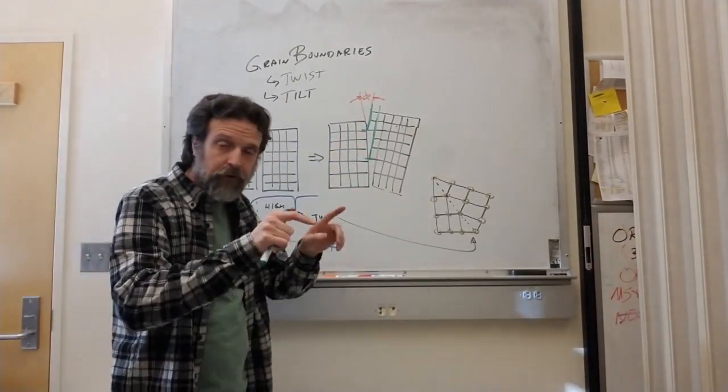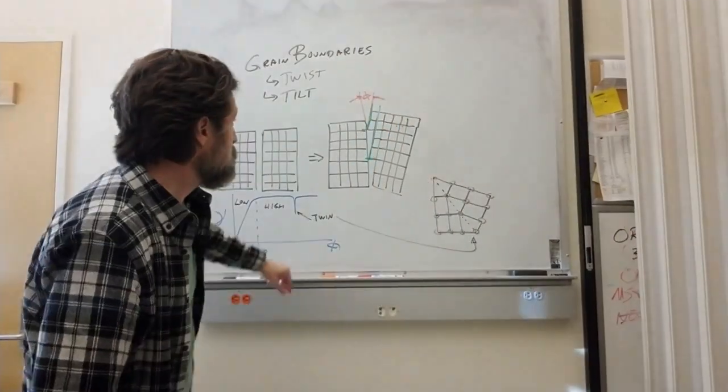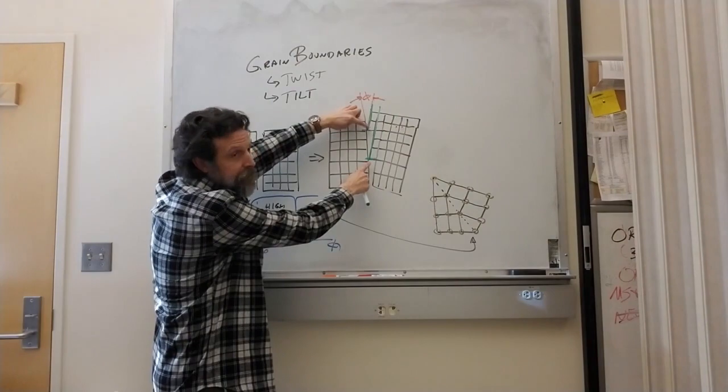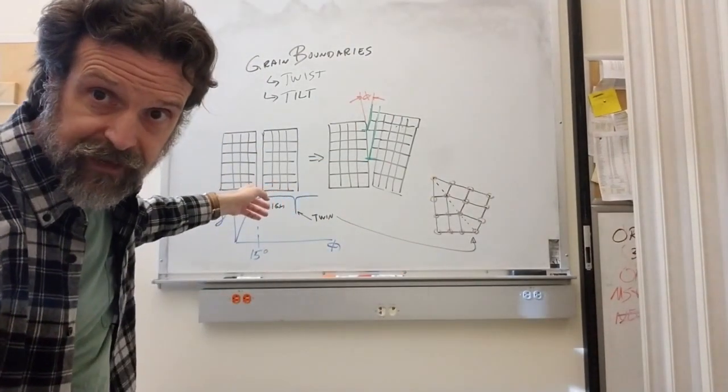As I move these further and further apart, I have to put more dislocations in to make up for the disregistry, which means these dislocations have to get closer and closer together to make up for the missing atoms.